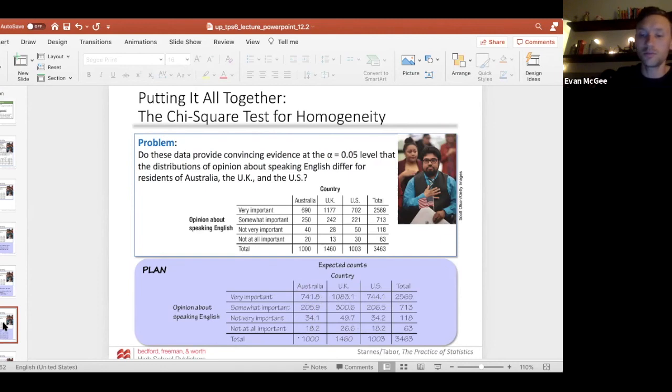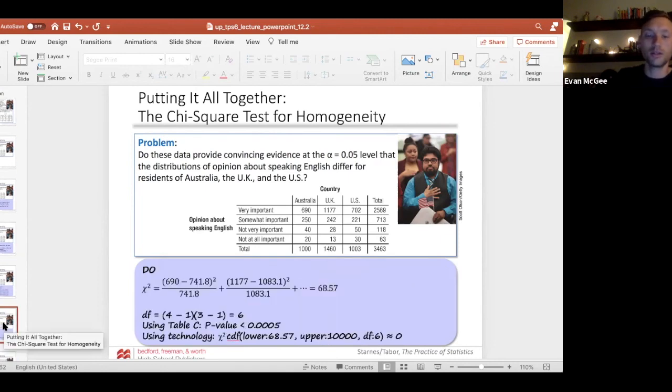Now that you showed all the expected counts are at least five, you can continue to calculate the chi-square test statistic 68.5, which I showed you how to do on the calculator. You can also use that to calculate the p-value.